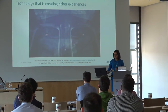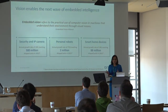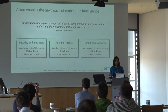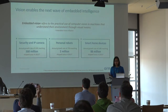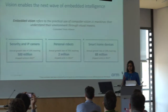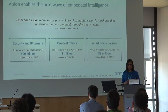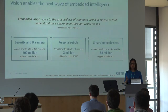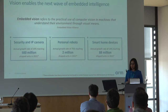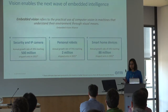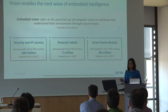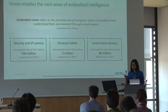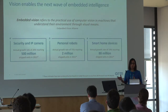So I hope you're convinced. Let's take a step back and see what embedded vision means. The Embedded Vision Alliance refers to embedded vision as the practical use of computer vision in machines so that they can understand their environment using visual means. To project some of the market potential: security and IP cameras have seen 20% annual growth, estimated at 500 million shipped units in 2021; personal robots have seen a 75% year-on-year growth rate; and smart home devices are estimated to reach 88 million units by 2021. Vision is enabling the next wave of embedded intelligence.